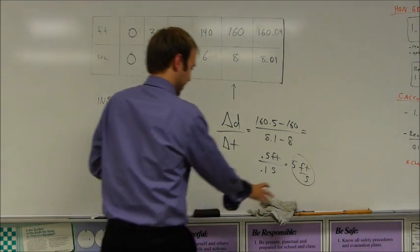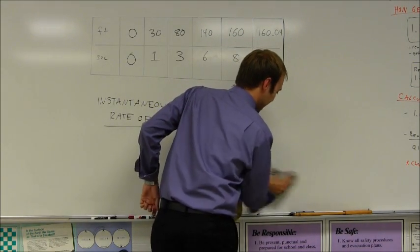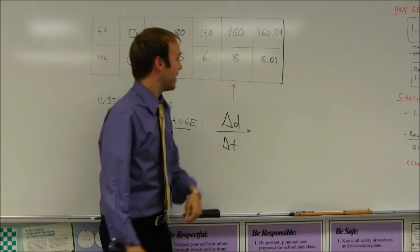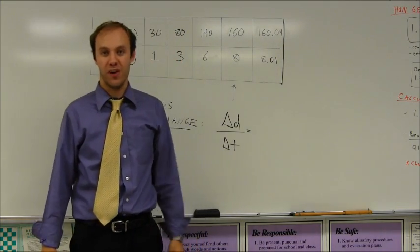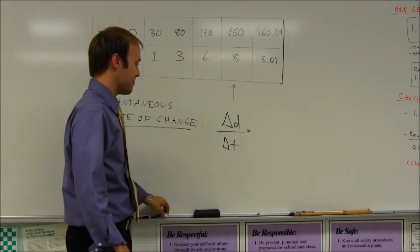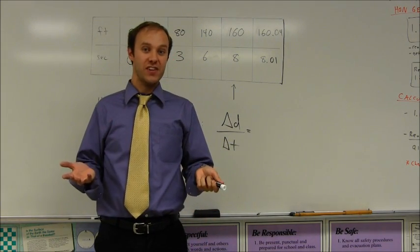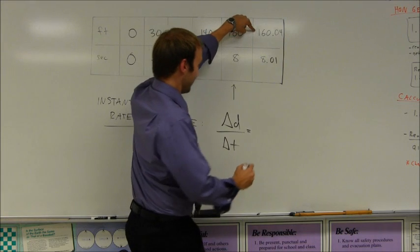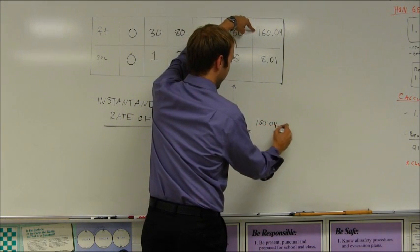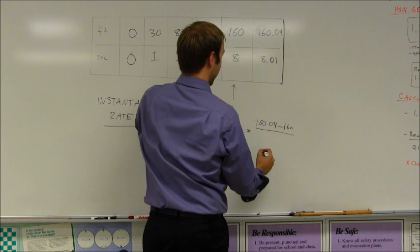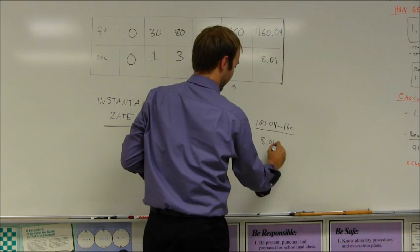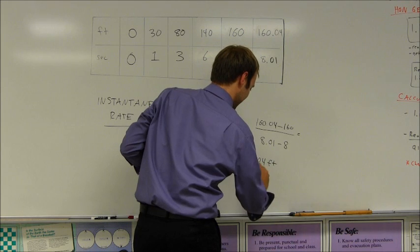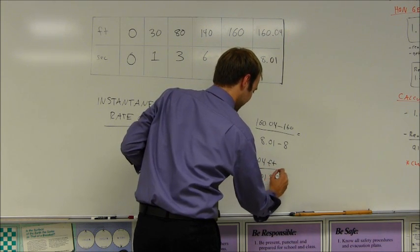All right. I've got my last example here. I'll take down the calculation from before. And you'll notice now that I have a piece of data in which I'm told that 8.01 seconds, my ball had traveled 160.04 feet. At this point, same thing as before. I just need to find out how much the distance changed over that interval of time, over a certain amount of time. So, my change in distance, 160.04 minus the 160 that had been at before, divided by the change in time, 8.01 minus 8.